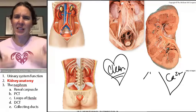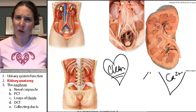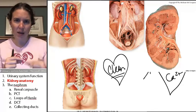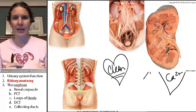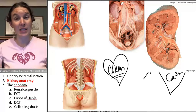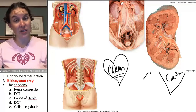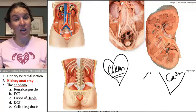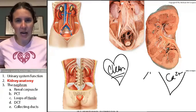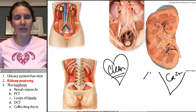That means that they only have parietal peritoneum covering one side of them, and it's the anterior side of the kidney. So they're actually found behind that.